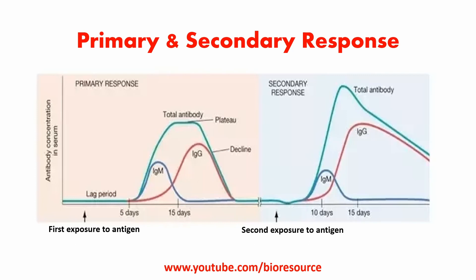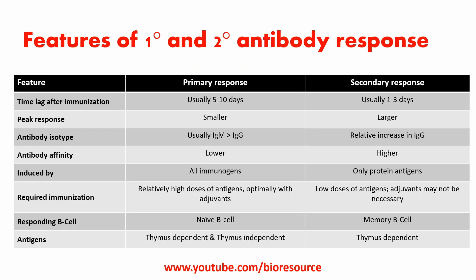With the passage of time after immunization, there is usually a progressive increase in the affinity of antibodies produced against the immunizing agent. This phenomenon is known as affinity maturation, and is due to the accumulation of point mutations specifically in both the heavy chain and light chain V region coding sequences.